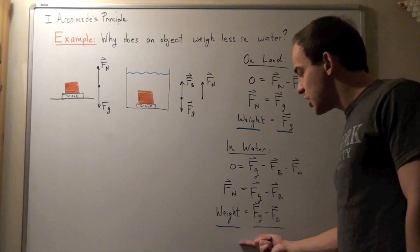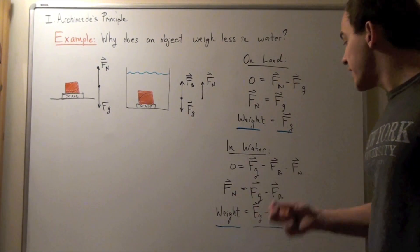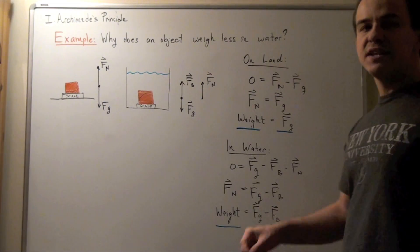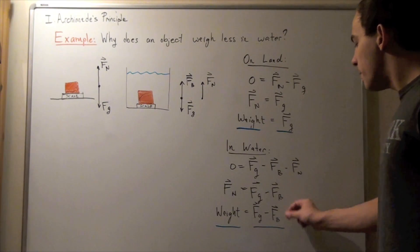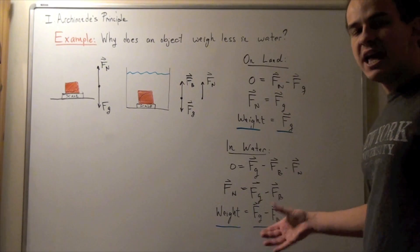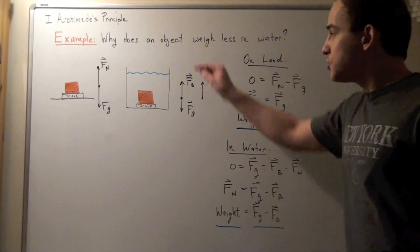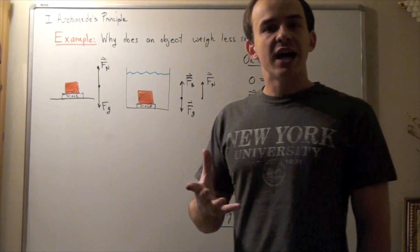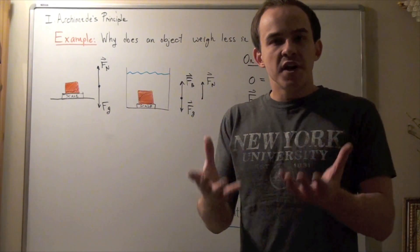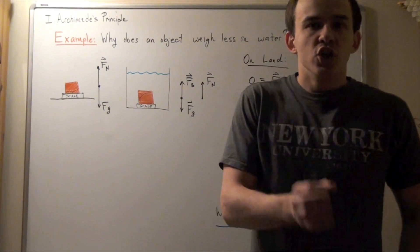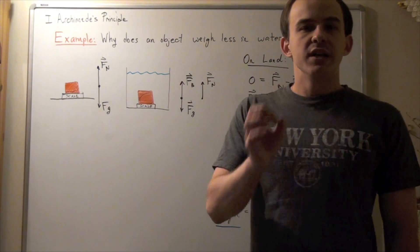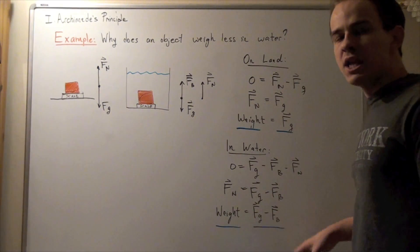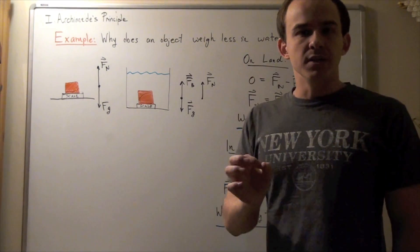Rearranging, the normal force equals force of gravity minus the buoyancy force. So the weight of the object in water is no longer the force of gravity alone — it's the force of gravity minus the buoyancy force. Because of that buoyancy component, the actual weight of the object in the water will be less compared to its weight on land. That's exactly why it's easier to lift a very heavy object in the water — because of the buoyancy component we obtain from Archimedes' Principle.